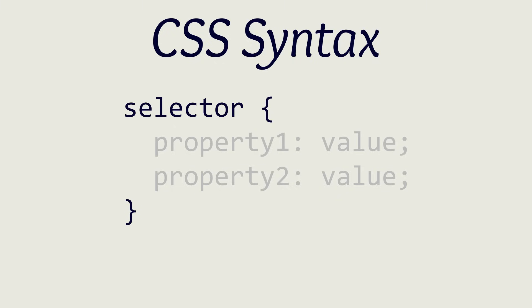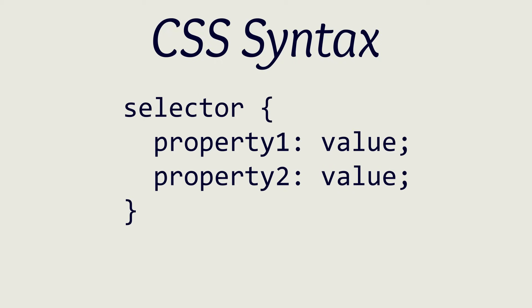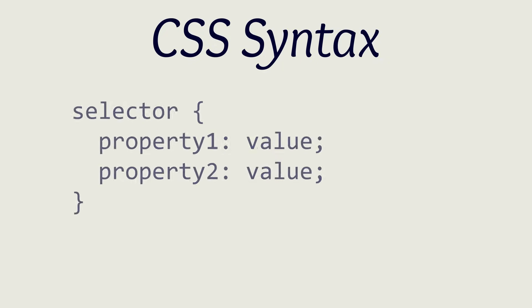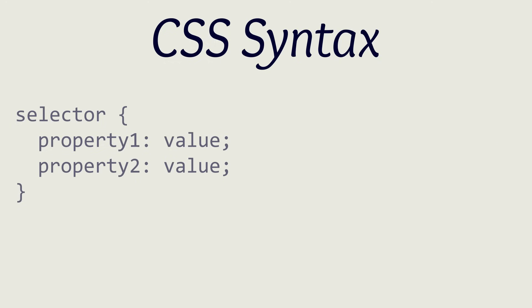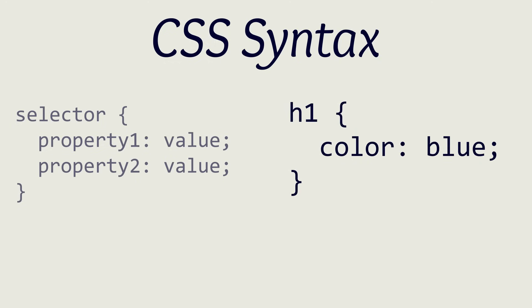Everything in between these curly brackets will be styles that are applied to the HTML elements that match the selector. Inside the curly brackets is one or more property-value pairs. Each of these pairs defines a property, such as color, font size, width, etc., and a value for that property. A basic example of the CSS syntax will be setting the text color of all H1 elements to blue.